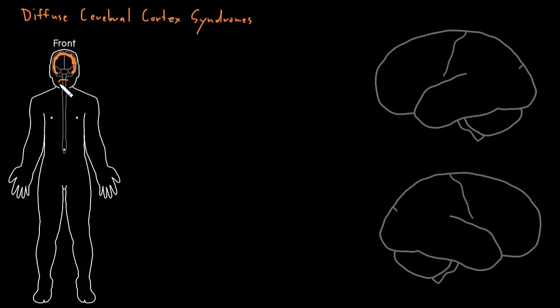And the most prominent thing we usually notice with folks that have this is that they're very confused. And of course confusion isn't a terribly specific word, but we all kind of know what we're talking about when we say somebody's confused. And I like to think of confusion as being a diffuse problem of cognition, and that usually goes along with diffuse dysfunction of the cerebral cortex.